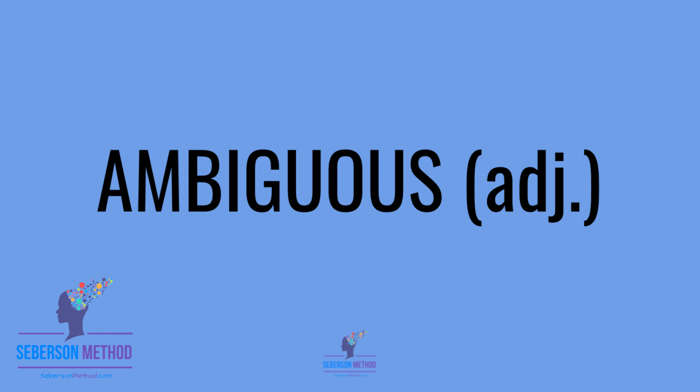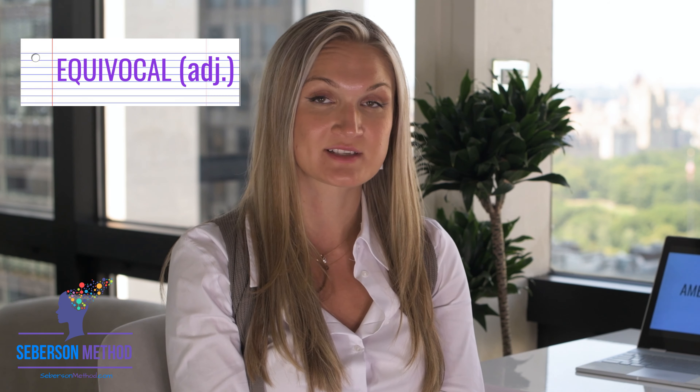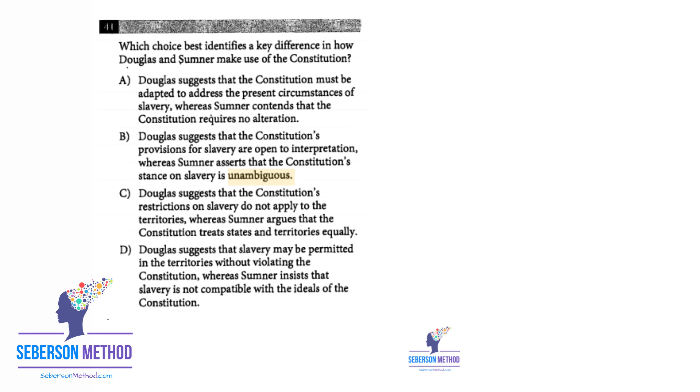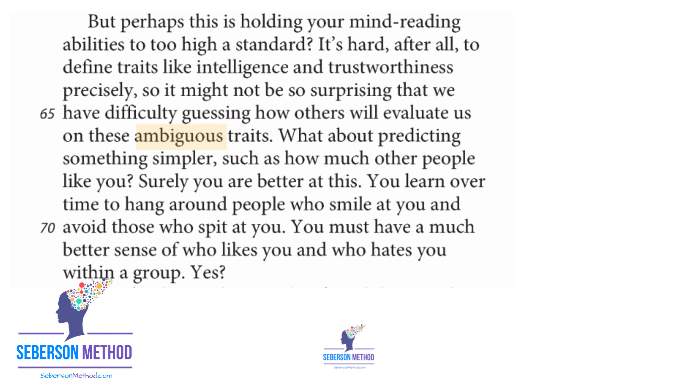Next word is ambiguous, which means unclear. On the SAT passages you'll see 'ambiguous' (unclear) and 'unambiguous' (very certain). Bonus word: equivocal and unequivocal — same idea. When something is equivocal, it's open to interpretation, kind of unclear. When something is unequivocal, it's very firm and indisputable. For example: 'Douglass suggests that the Constitution's provisions for slavery are open to interpretation, whereas Sumner asserts that the Constitution's stance on slavery is unambiguous.'